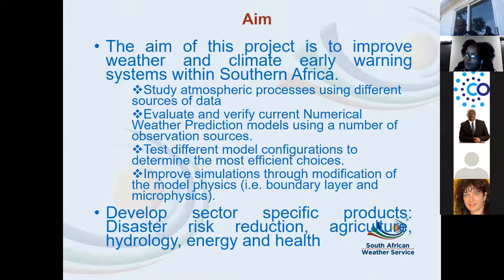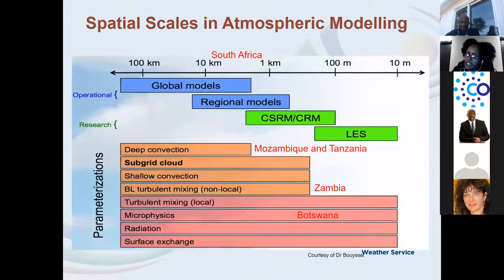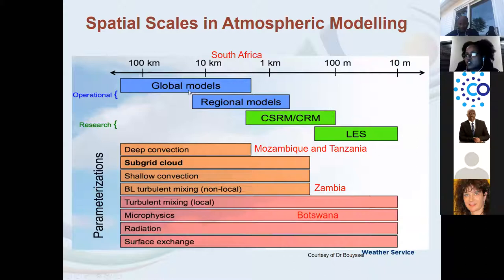We think of the project as a pilot with six participating countries. We focused on nine-kilometer and three-kilometer resolutions. Different countries looked at different research questions: South Africa and Namibia examined the impact of changing resolution; Mozambique and Tanzania looked at sensitivity of heavy rainfall to deep convection schemes; Zambia looked at sensitivity to boundary layer schemes; while Botswana looked at sensitivity to microphysics schemes.